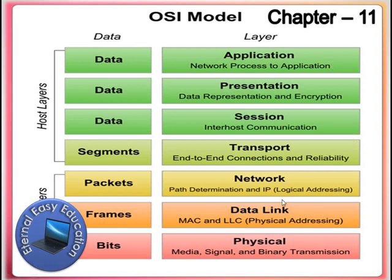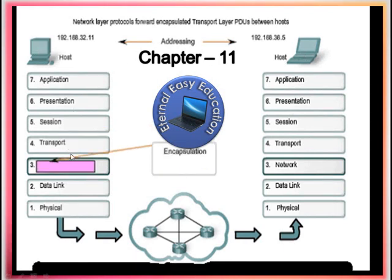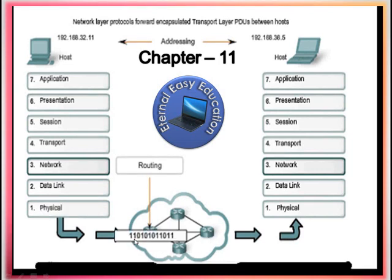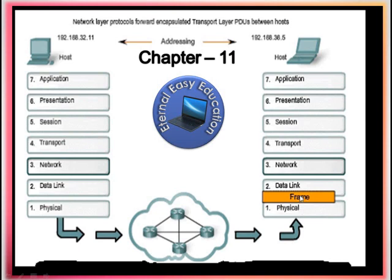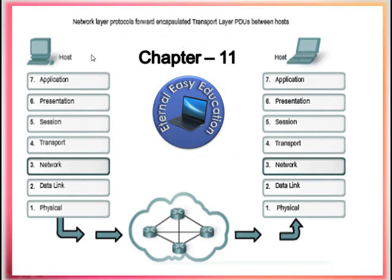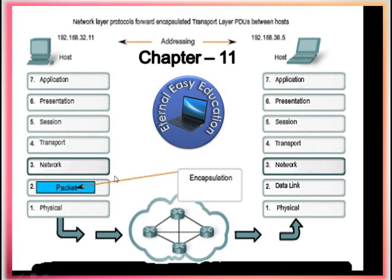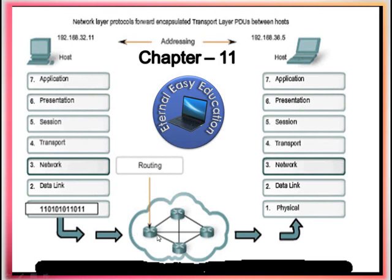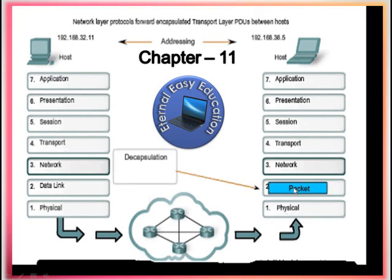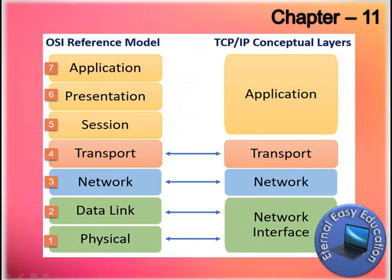The data from one host to another is passed through the layers. Using the Physical layer, data is converted into bits, then into frames, then into packets, and then back to data, which is given to the destination host. At the destination, the process reverses: bits go to frames, frames to packets, packets back to data, and the data is delivered to the host. This is the working principle of the OSI model.